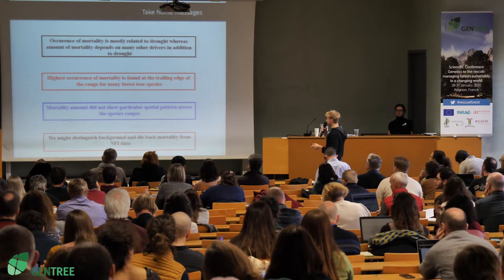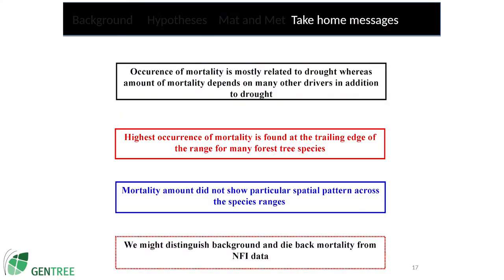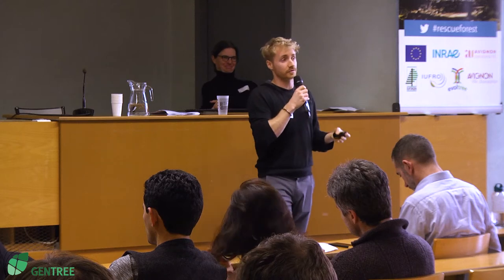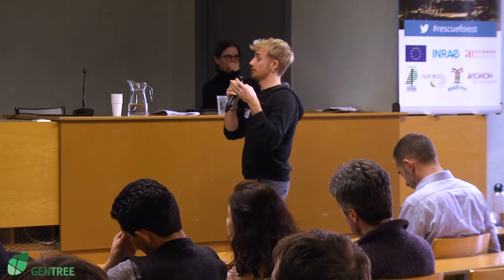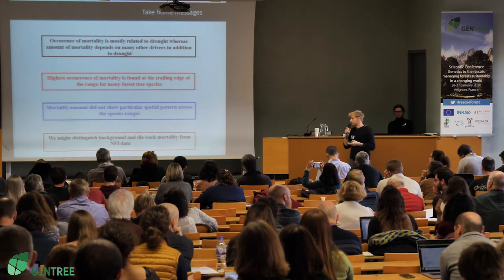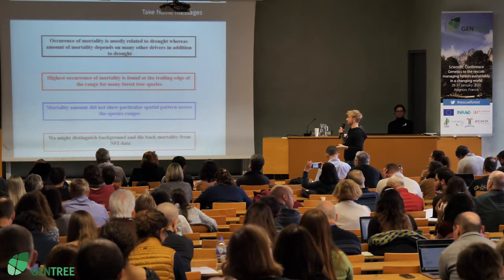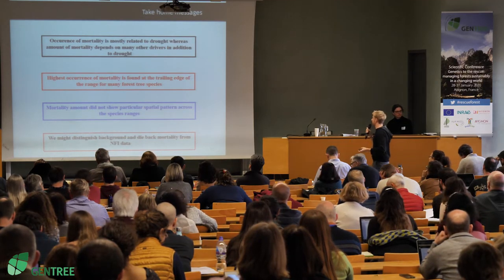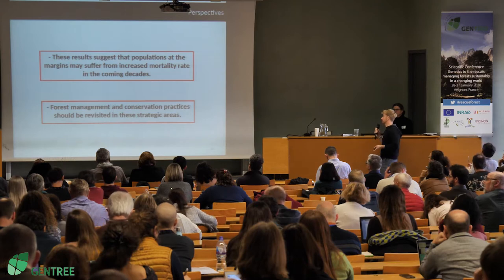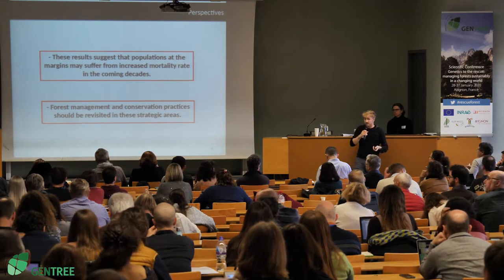Four main messages. First, the occurrence of mortality was mostly related to drought, especially at the trailing edge. And the amount of mortality depends on many other drivers in addition to drought. The highest occurrence of mortality was found at the trailing edge of the ranges for many forestry species. Mortality amount did not show such a clear pattern. Finally, from the last two messages, maybe we can distinguish background and dieback mortality from national forest inventories data. These results suggest that populations at the margins may suffer from increased mortality rates in the coming decades, and forest management and conservation practices should be revisited in these strategic areas.